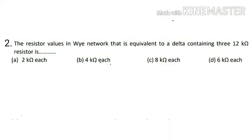Question number two: the resistor values in a Y network that is equivalent to a delta containing three 12 kilo ohm resistors is dash. Three resistances are in the form of delta connection, and this delta connected network is equivalent to a star connection. We have to calculate the resistances in the star connection.